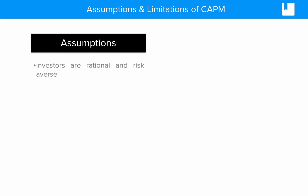When we first started looking at the Capital Asset Pricing Model, we made a number of key assumptions. These include that investors are rational and risk-averse, and they're not symmetrical in the way that they take risk, which we looked at in risk return and diversification.